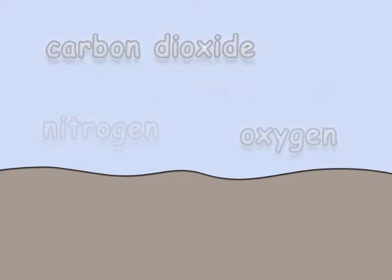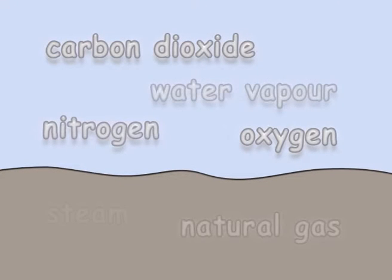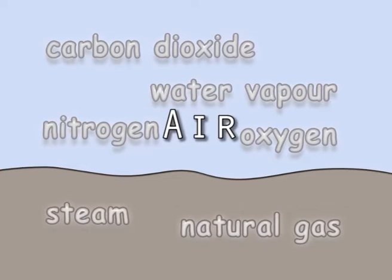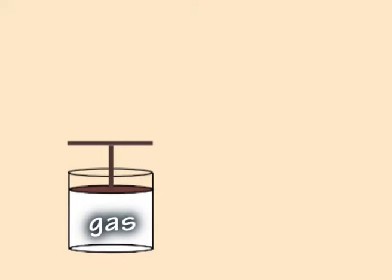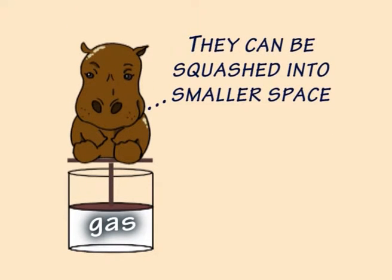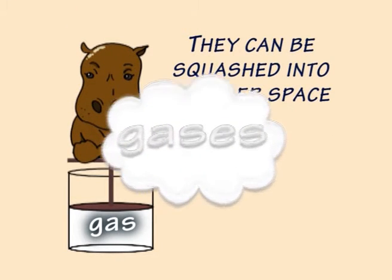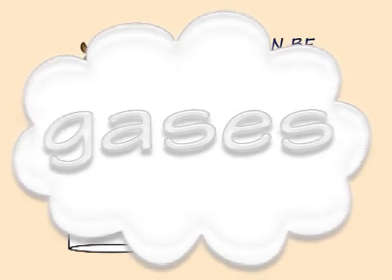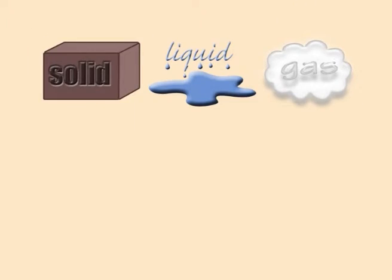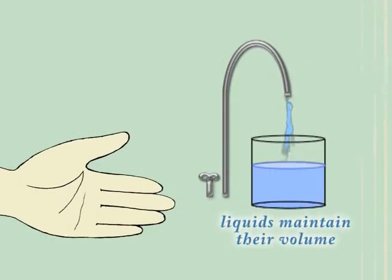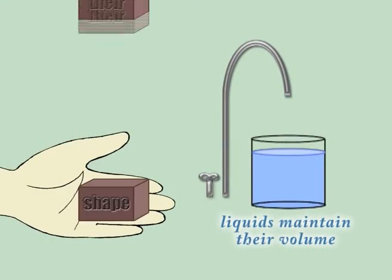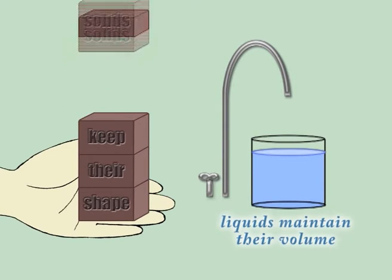Masses of gases can be found up in the air and under the ground. They can be squashed into a smaller space, and spread out all over the place. Liquid and solid are different kinds of states. One maintains its volume and the other its shape.